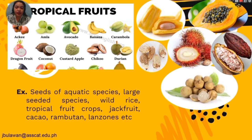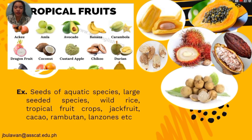Seeds of aquatic species, large-seeded species, wild rice, tropical fruit crops, cacao, rambutan, lanzones, and others such as chico, durian, carambola (which is the balimbing), averrhoa, atis, dragon fruit, and coconut — these are all examples of recalcitrant seeds as they are tropical fruits.